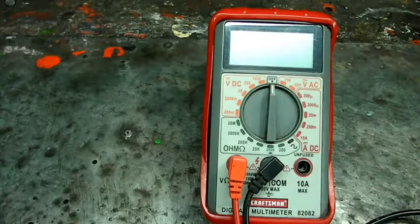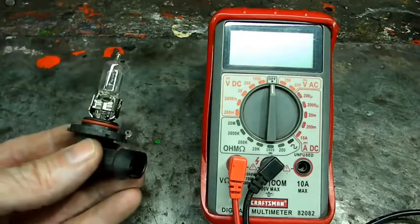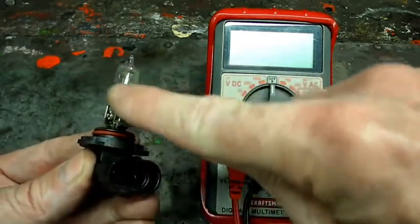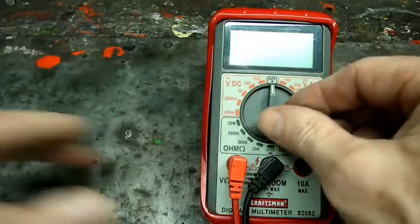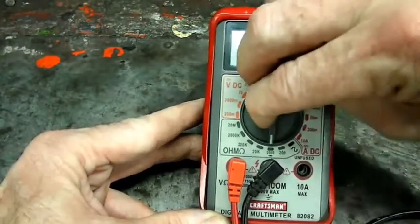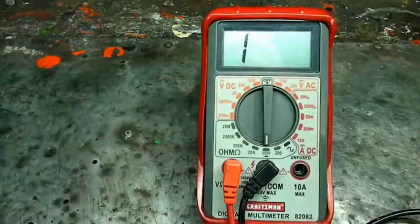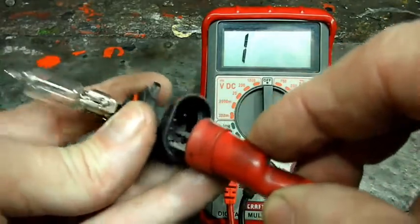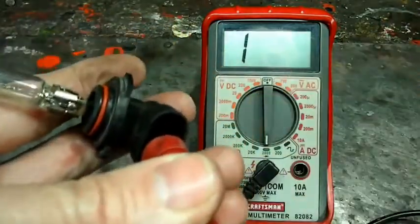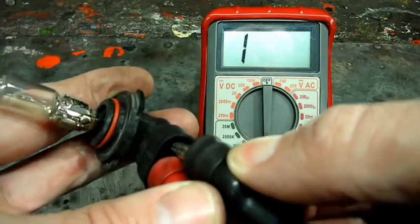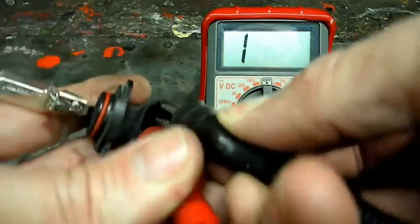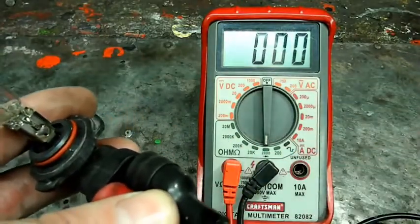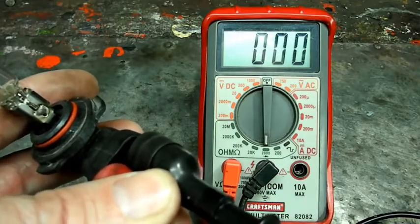Next thing we can check is continuity. In this case we're going to be checking an ordinary headlight bulb and see if it's good. We want to see if continuity is going all the way through the bulb. So we need to set the meter on the ohm scale, we're going to go down to 2000. We'll take our clips, clip it to one of the pins, and then take the other one, clip it to the other pin inside the headlight bulb. And there we go. This one right here is a good working headlight bulb.